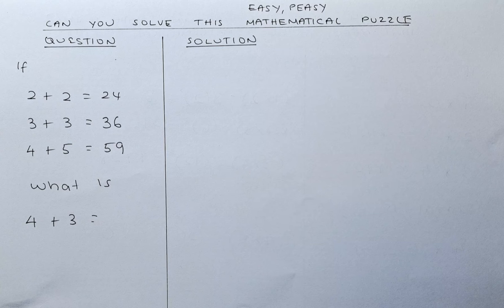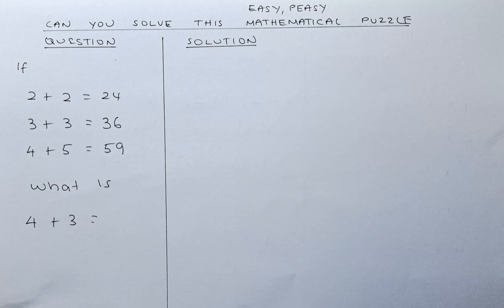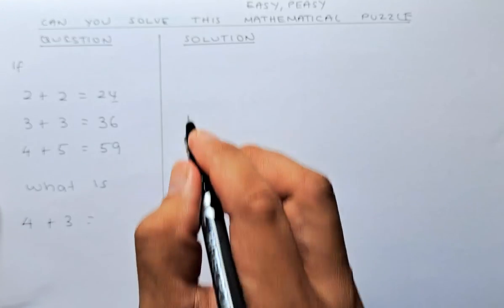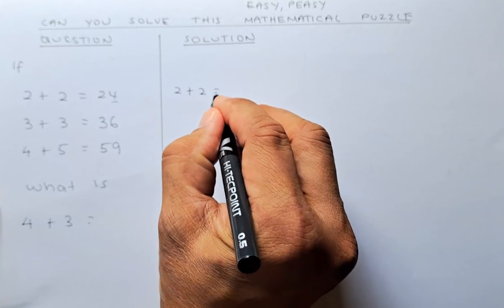Okay, so if you look at this equation, the last number here is the actual sum. So 2 plus 2 is equal to 4, that's right.